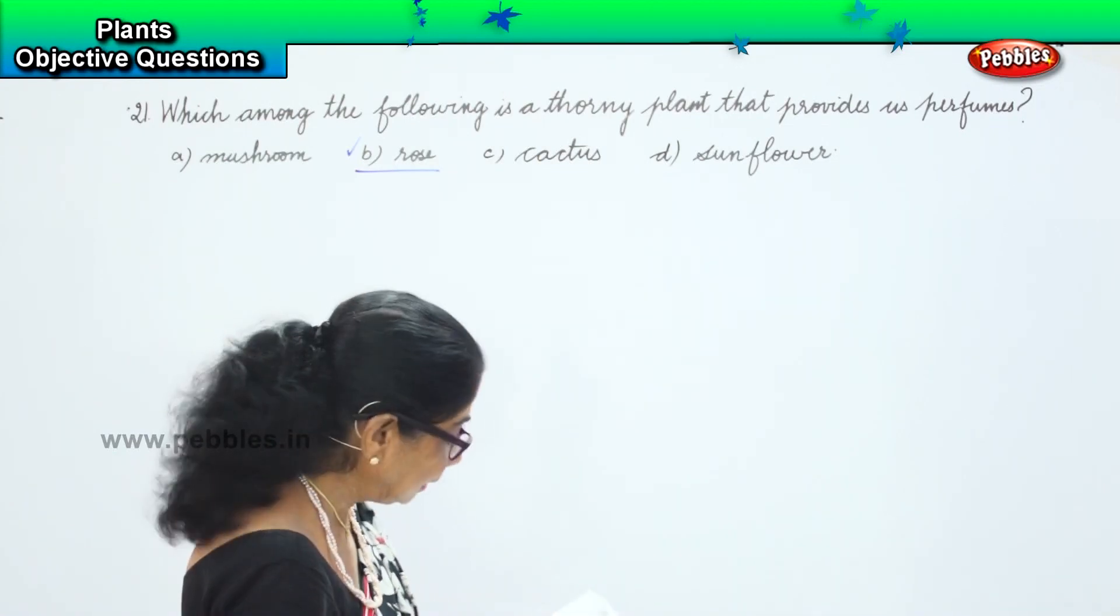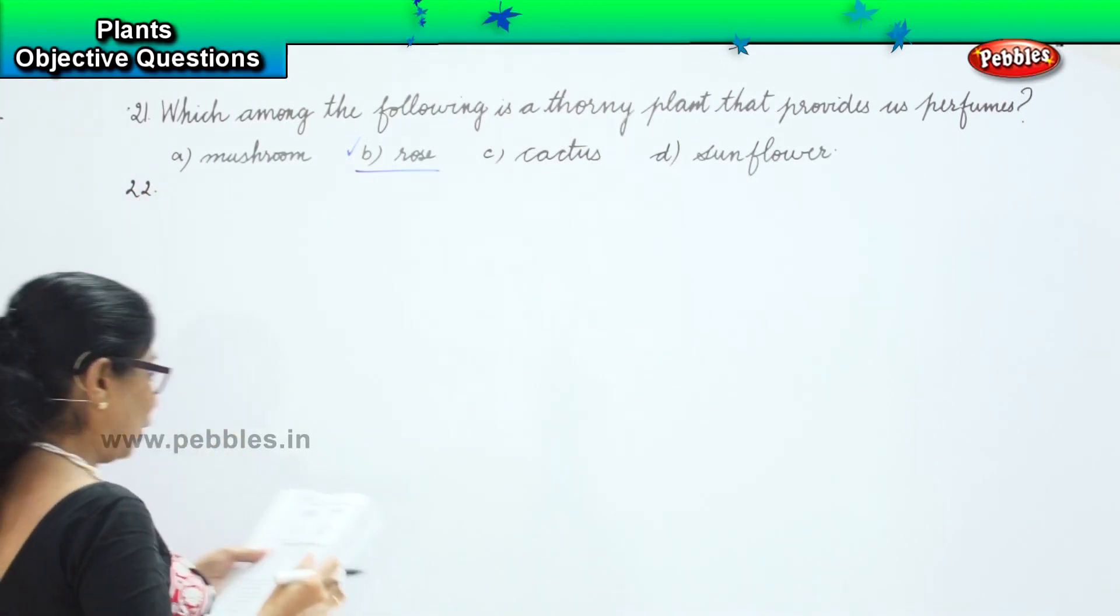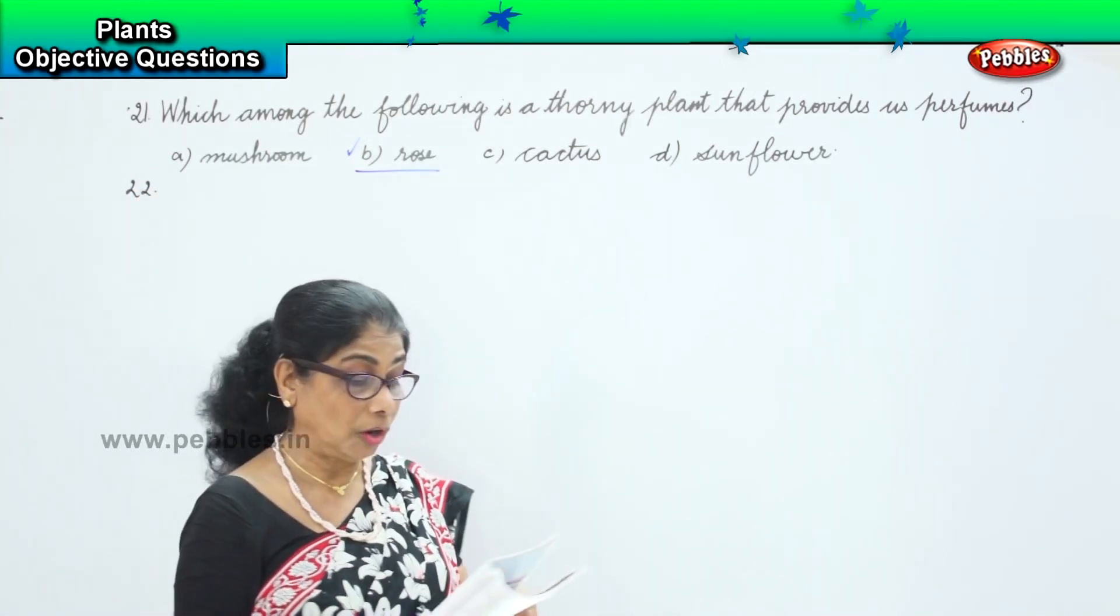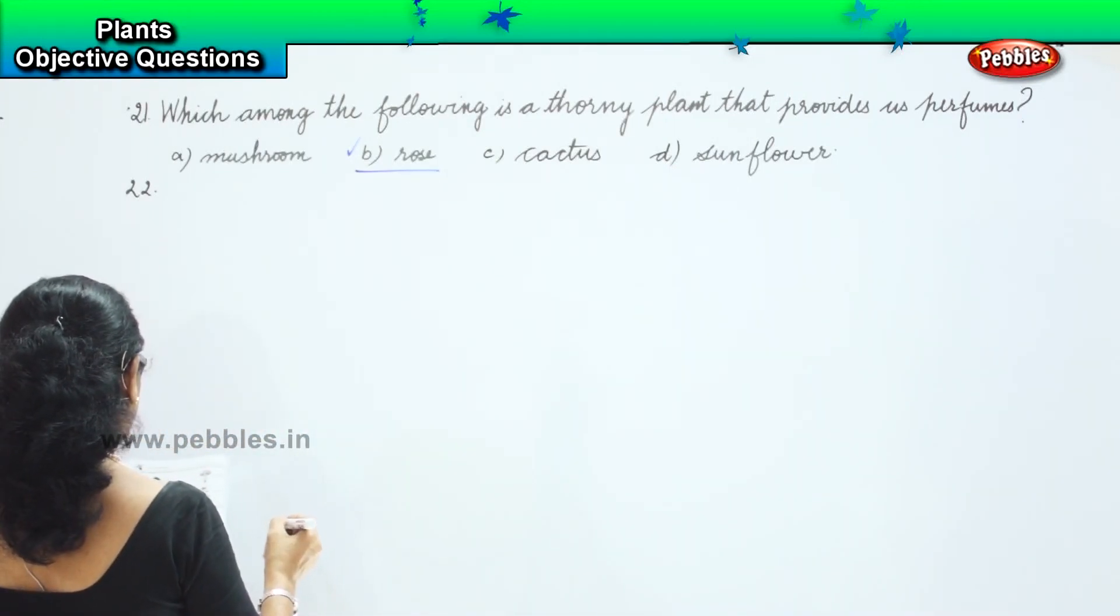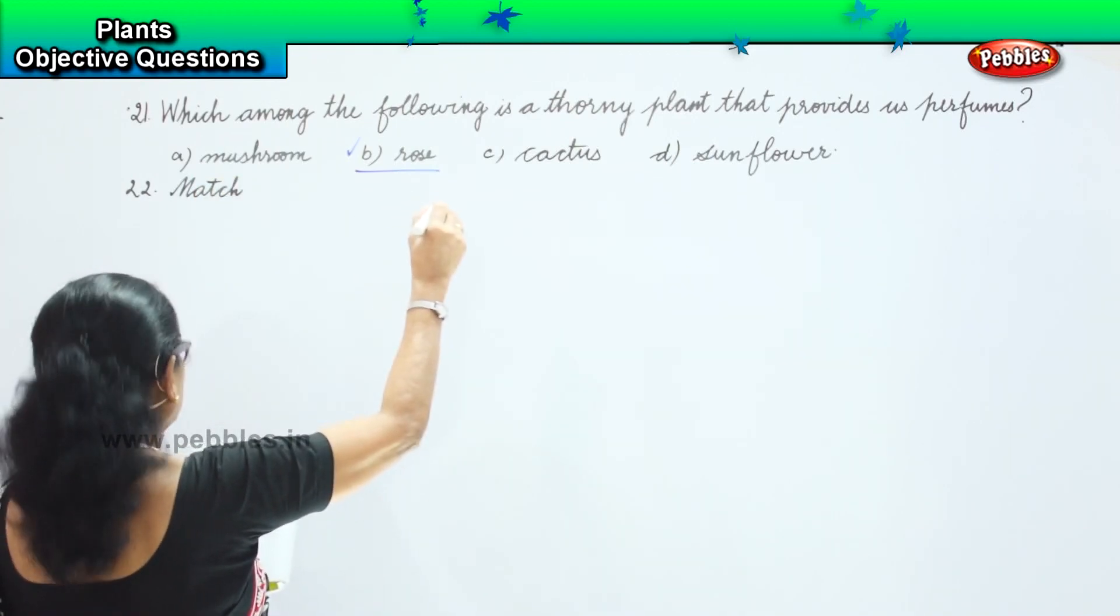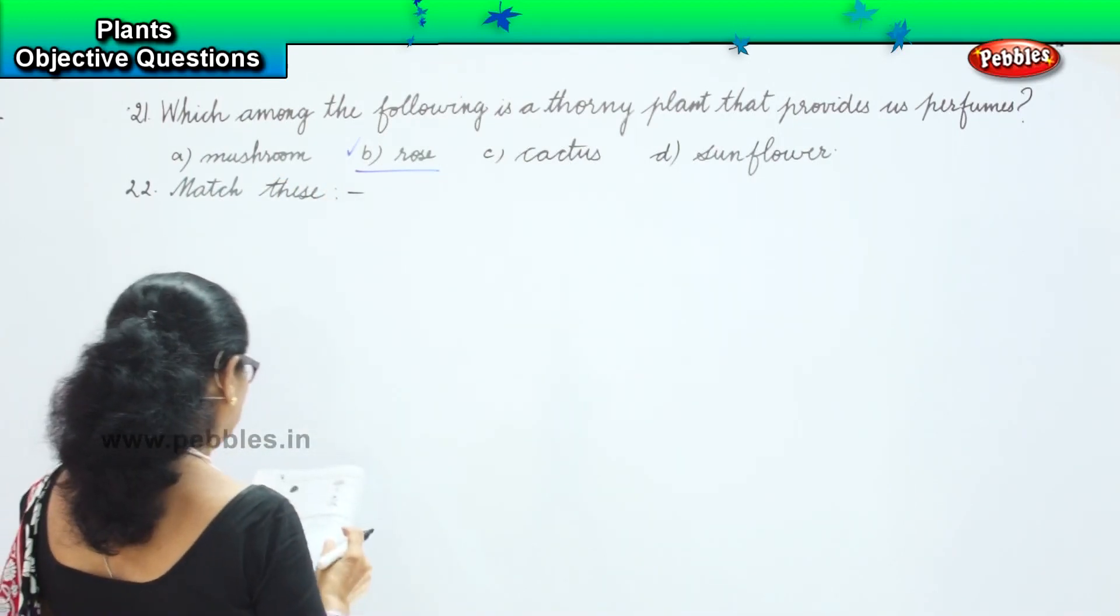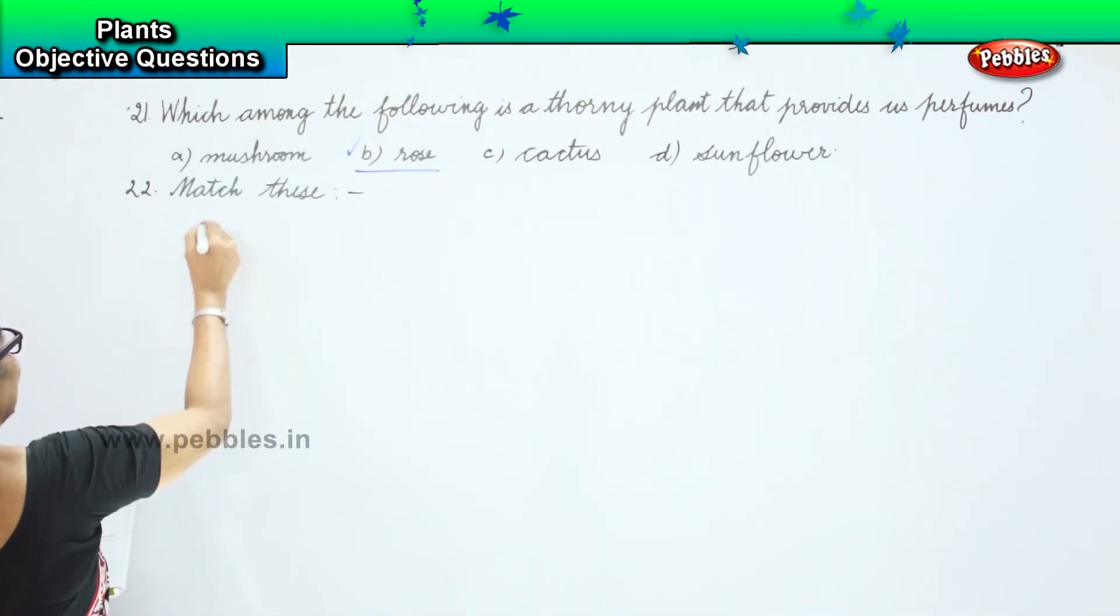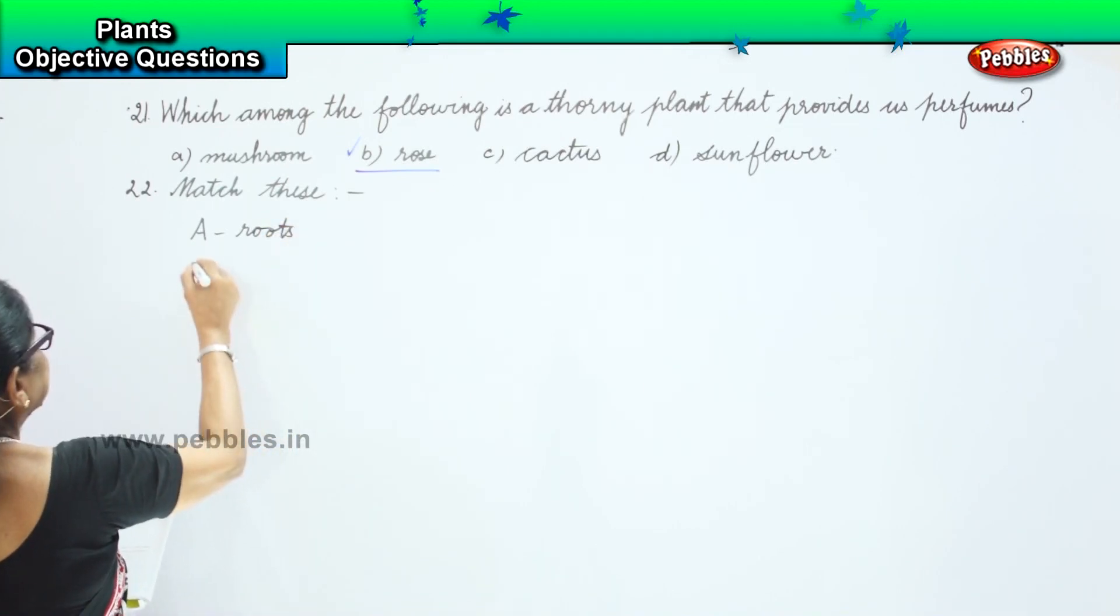The next question, you have column 1 and 2 and we have to match, then find the correct option. Match column A with B.